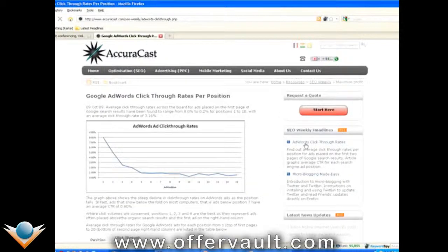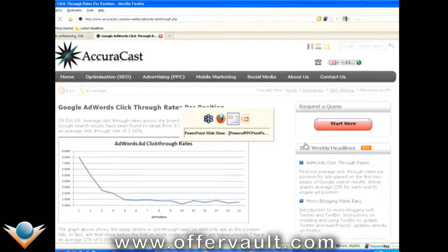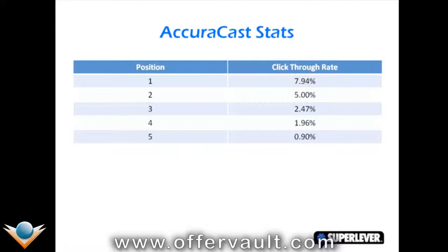Looking at this graph, ads in position one in pay-per-click receive about eight times the clicks of ads in position four. Curacast surveyed in excess of 1.2 million clicks around the world to find out how ad rank affects click volume. If you're in position one, you're getting eight times the clicks of position five. Jay will share how, if you're currently at position five and move your ad up just one spot to position four, you'd essentially be doubling your clicks — and doubling traffic puts you well on your way.